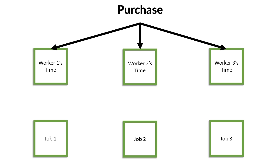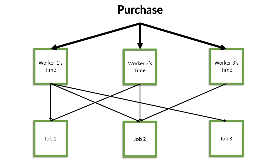For example, worker one spent time in job one, job two, and job three. Worker two spent time on job one and job two. And worker three spent time only in job two. All of this data is tracked in a job order cost accounting system because our goal is to track how much is spent on each individual job so we can perform better analysis, have better insights, and all that.